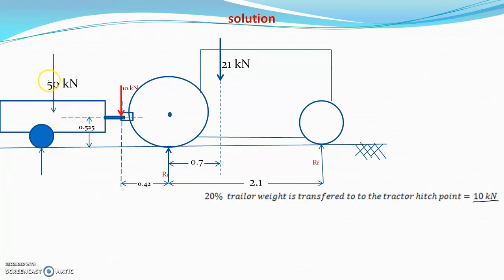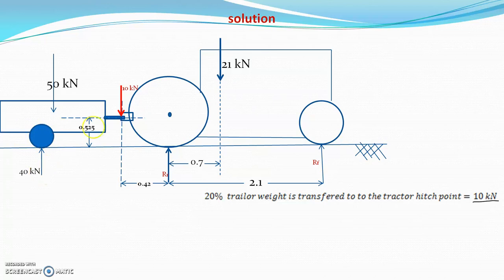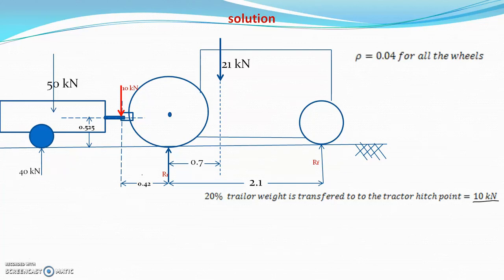The remaining 40 kilonewtons out of the 50 kilonewton gross trailer weight is supported by the trailer's single axle wheel. The rolling resistance coefficient is 0.04 for all wheels — both tractor and trailer wheels. Now we can calculate the drawbar pull required to move the trailer.